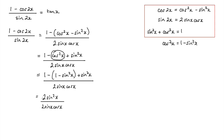Now we can cancel the 2's. We can cancel this sine x with one of these, and we end up with sine x over cos x. And we know that sine x divided by cos x can be written as tan x.